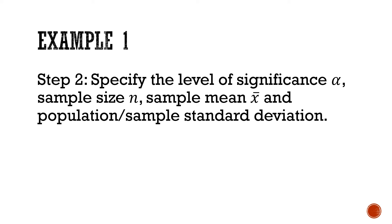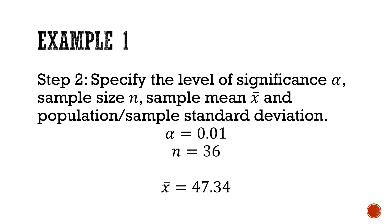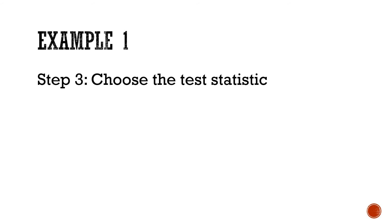Step two: specify the level of significance alpha, sample size n, sample mean x-bar, and population or sample standard deviation. We are given alpha as 0.01, sample size as 36, sample mean as 47.34, and population standard deviation as 5.15. Since the population standard deviation is known, we will use it and apply the z-test with the population standard deviation formula.